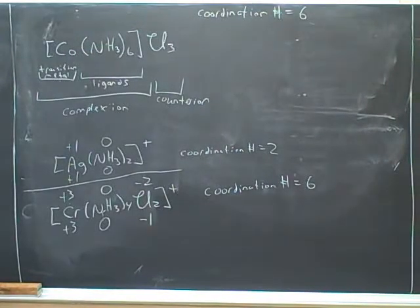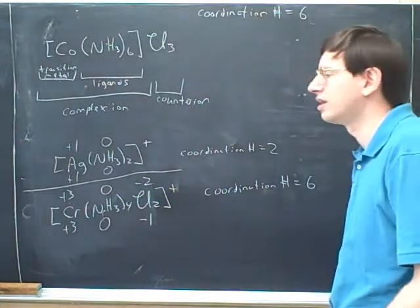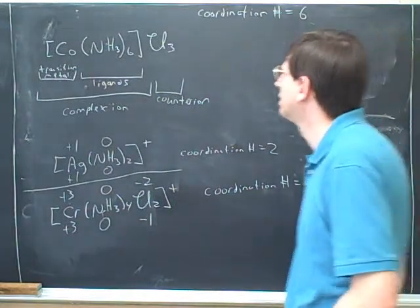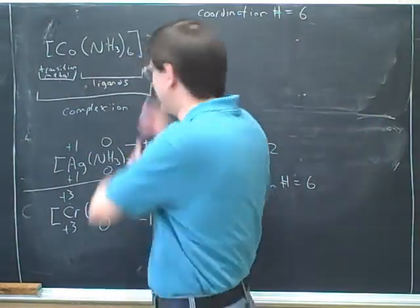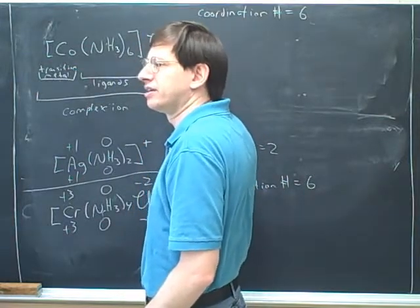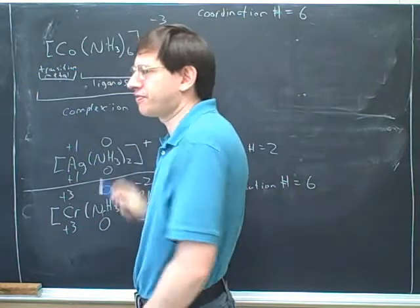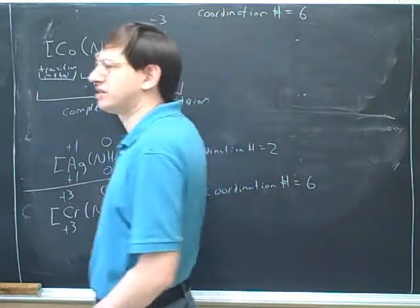So for the top one, the chlorine, the whole coordination complex, the entire charge would be a negative 3. Good, so let's move on to that. So what would be the charge on each individual chloride here? Negative 1. So for the group it would be negative 3. The charge on the ammonias is? Zero.